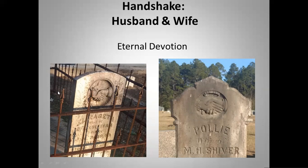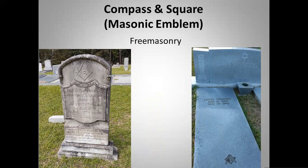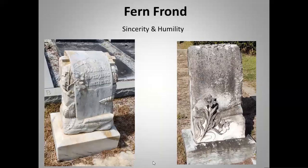The compass and square — most people know them as the Masonic emblem — are for Freemasons. On the left, the emblem is at the very top of the stone. On the right, a newer granite stone has it at the bottom, and you can also tell this person was Jewish and still a Freemason — some people don't realize that Freemasons are not of a singular religion.